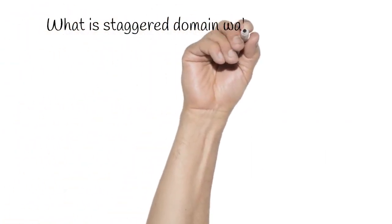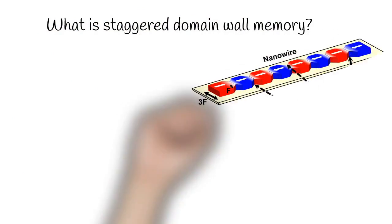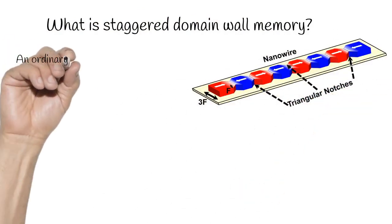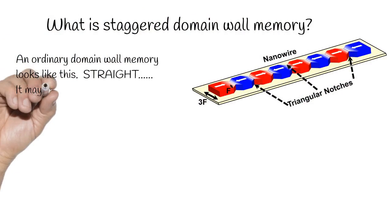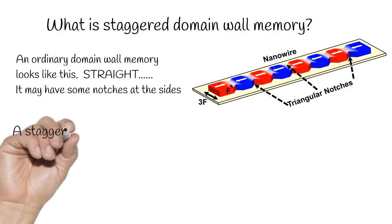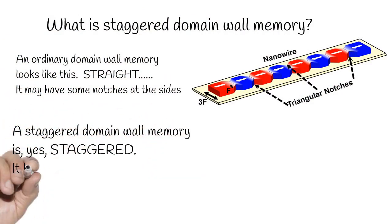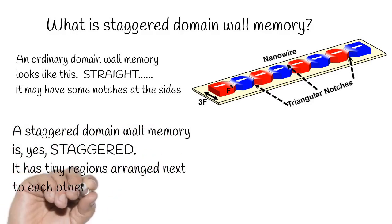What is staggered domain wall memory? An ordinary domain wall memory looks like this. It's straight. It may have some notches at the sides. A staggered domain wall memory is, yes, staggered. It has tiny regions arranged next to each other with a slight shift.